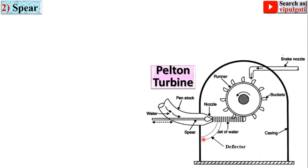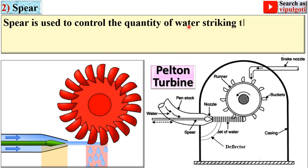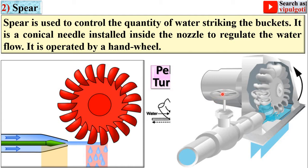Next part: the spear. The spear is used to control the quantity of water striking the buckets. It is a conical needle installed inside the nozzle to regulate the water flow or discharge. It is operated by a hand wheel. Here you can see the hand wheel, the nozzle, and the Pelton wheel.